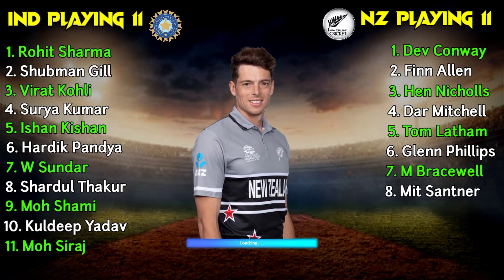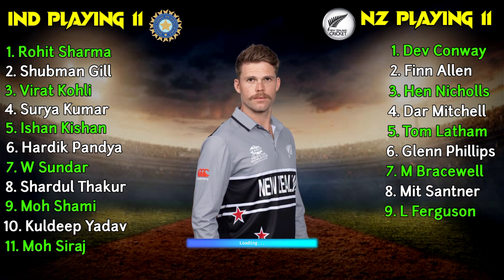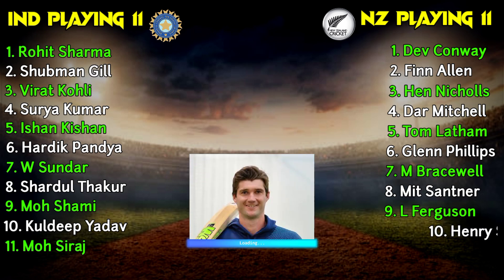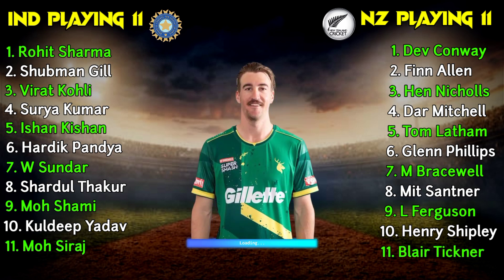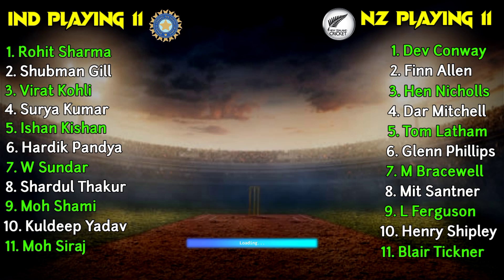New Zealand team bowlers: Number 8 Mitchell Santner, all-rounder. Number 9 Lockie Ferguson, fast bowler. Number 10 Henry Shipley, fast bowler. Number 11 Blair Tickner, fast bowler.